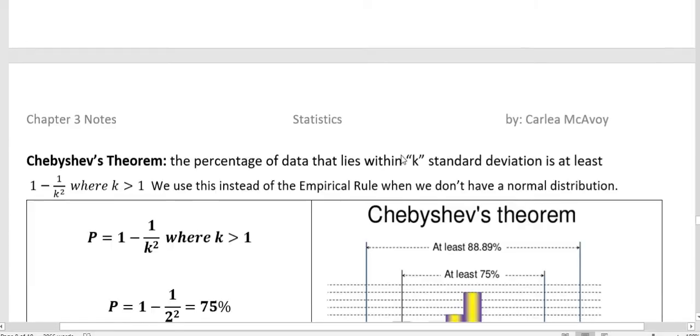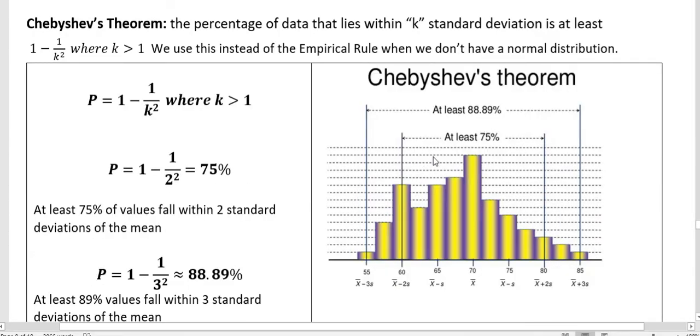But notice when we're using the empirical rule, we have this nice bell-shaped curve. But when we don't have that, and we want to talk about the data and where it lies, we can use Chebyshev's theorem. And we notice our data set is definitely not normal shaped here. Do you see how down here they say x bar plus 2s? That means the s is standard deviation.